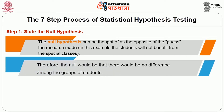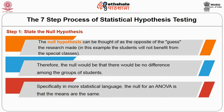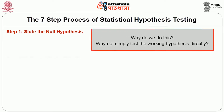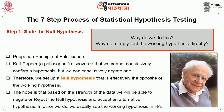For example, if we want to find out whether special classes for students after school hours has benefited the students or not, we shall set up a null hypothesis that special classes after school hours have not benefited the students. The null hypothesis can be thought of as the opposite of the guess the researcher made; therefore the null would be that there would be no difference among the groups of students. Specifically, in more statistical language, the null for an ANOVA is that the means are the same. Why not simply test the working hypothesis directly? The answer lies in the Popperian principle of falsification. Karl Popper, a philosopher, discovered that we cannot conclusively confirm a hypothesis, but we can conclusively negate one. Therefore, we set up a null hypothesis that is effectively the opposite of the working hypothesis, hoping to negate or reject it and accept an alternative hypothesis.